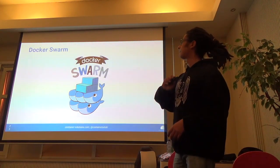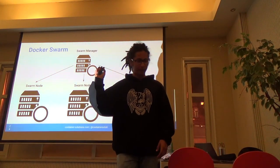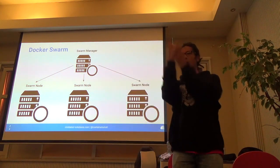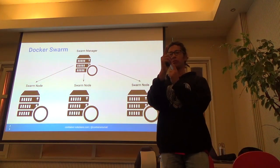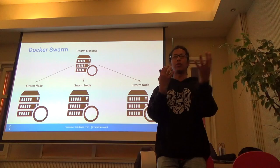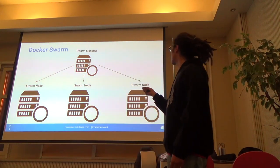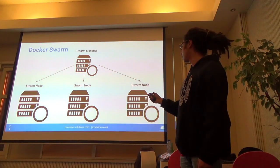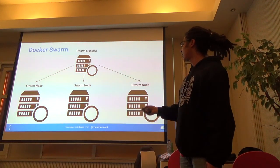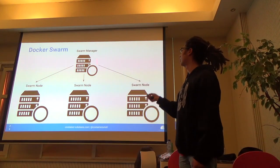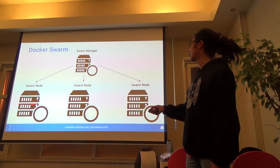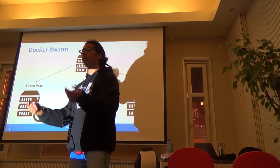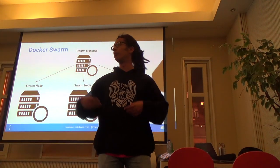So Swarm helps you treat your whole data center — your whole pool of Docker hosts — as one single unit. You talk to one Docker host, but in the background you're talking to your whole cluster. The Swarm manager runs on one of your nodes. The rest of the nodes just run Docker containers, and they all report to the manager, saying: we're here, we have resources, give us a Docker image and we'll run it for you.